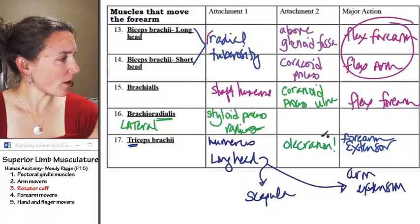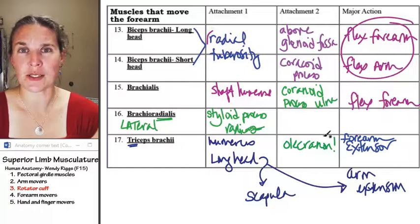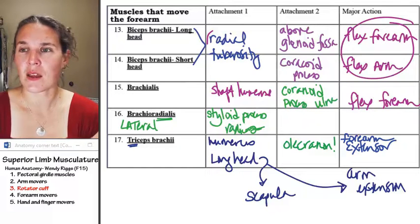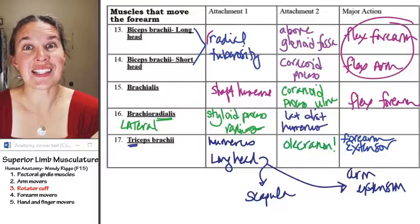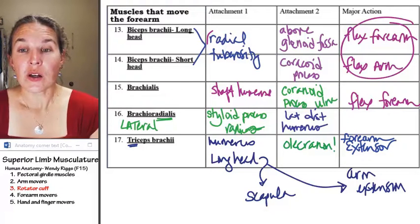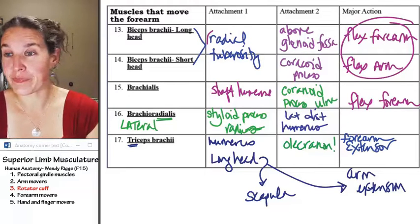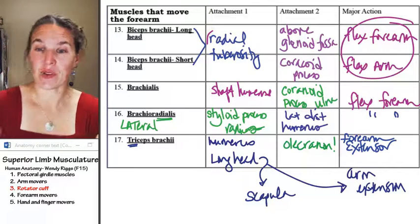And then its other attachment is somewhere on the humerus. Shall we check where? Brachioradialis, lateral distal humerus. I love that. Look, lateral distal humerus. And what does it do? Flexes the forearm.